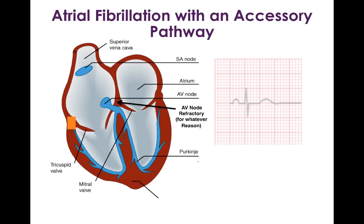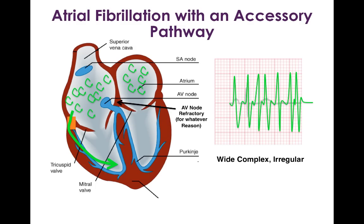A third scenario is atrial fibrillation with an accessory pathway. Atrial fibrillation is a micro-reentrant arrhythmia in the atria, so the accessory pathway and AV node are constantly bombarded by electrical signals. The AV node can't conduct faster than about 150 beats per minute, but the accessory pathway, being similar to ventricular myocardium, can conduct relatively frequently. Through the accessory pathway, you get rapid, irregular stimulation of the ventricles, leading to a wide complex, irregular tachyarrhythmia — atrial fibrillation through an accessory pathway.